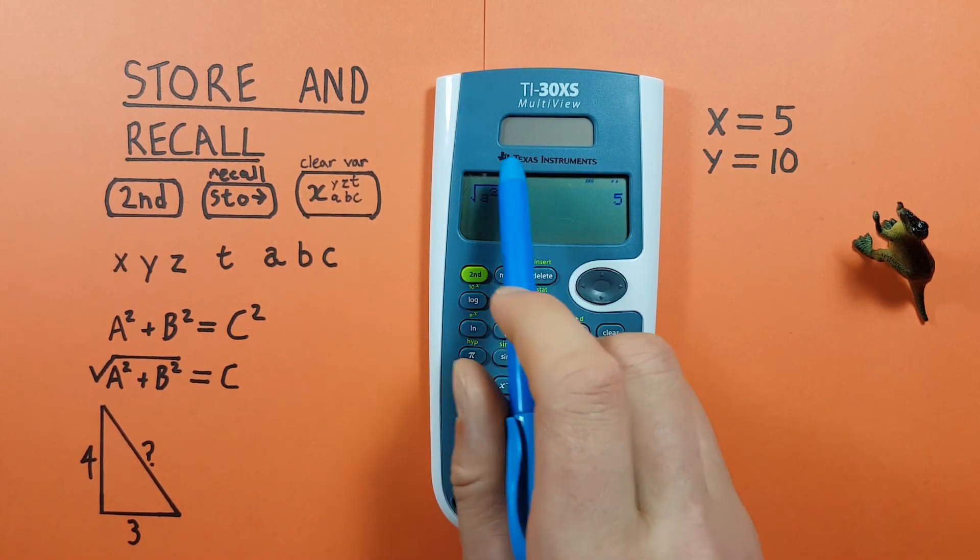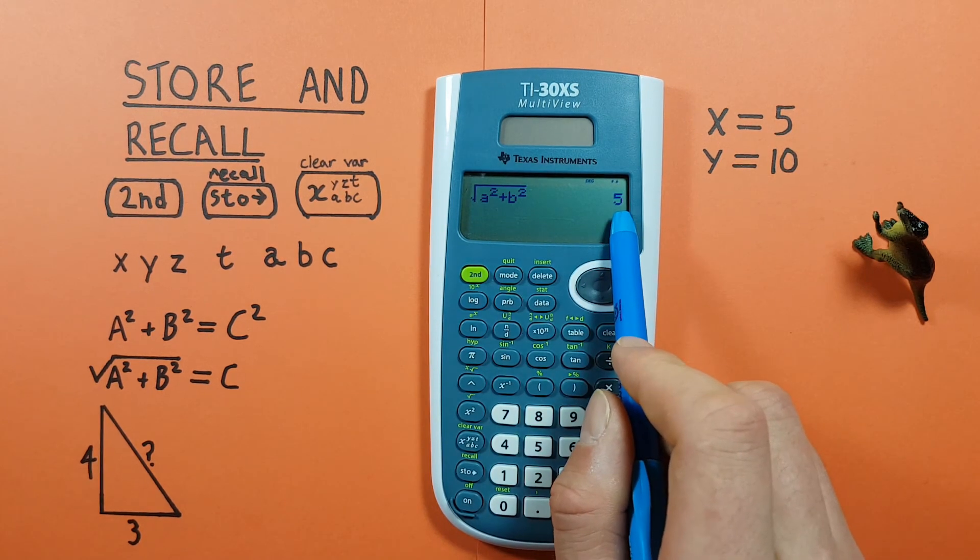So a squared plus b squared, all square rooted is equal to 5, which is correct.